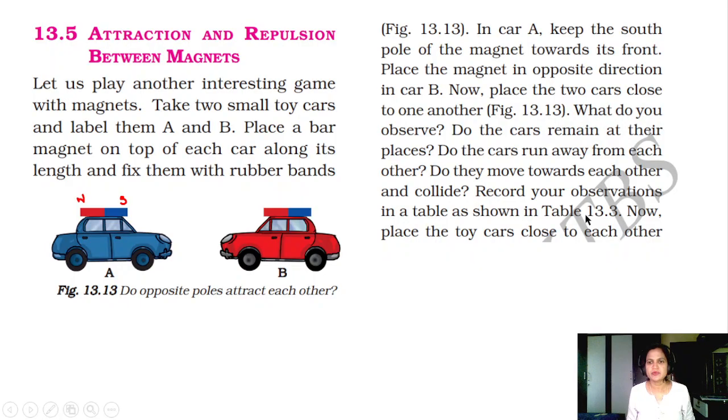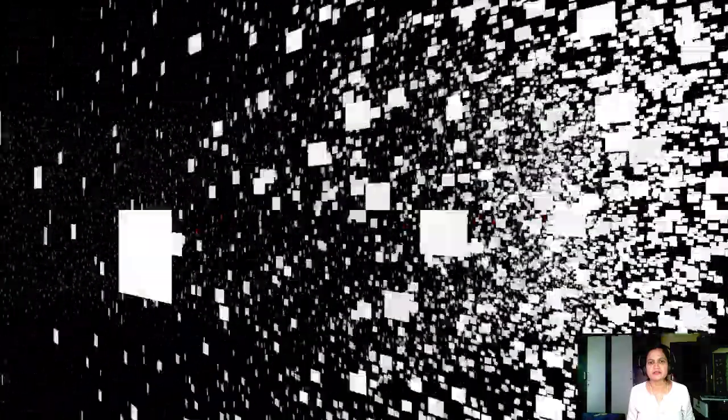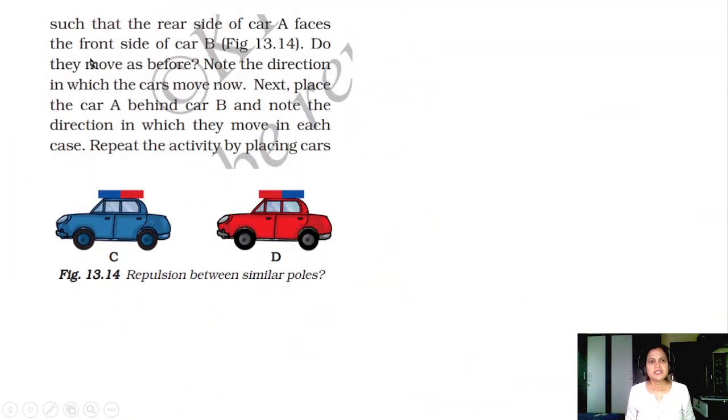Record your observations in Table 13.3. Now place the toy cars close to each other. Do they move towards each other such that the rear of car A faces the front of car B? Do they move as before? Note the direction in which the cars move. See the repulsion between similar poles. You observe this.